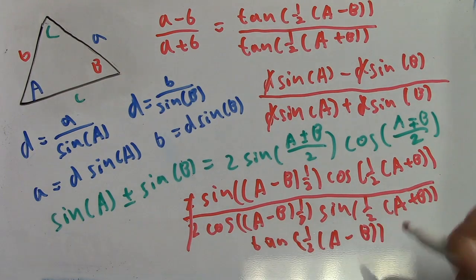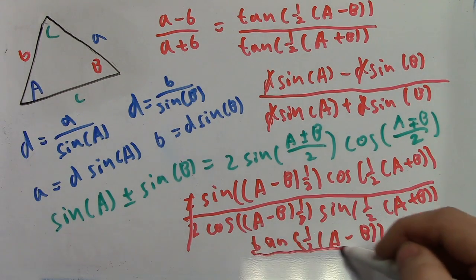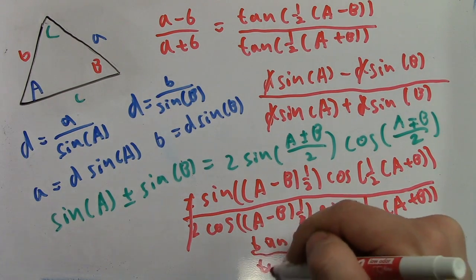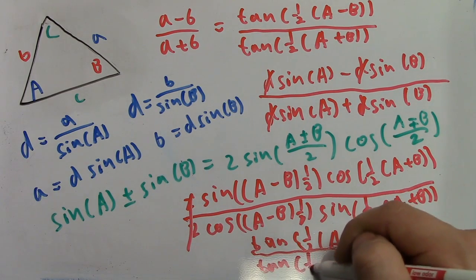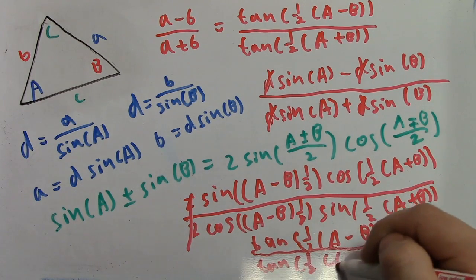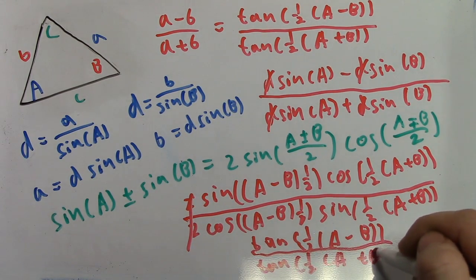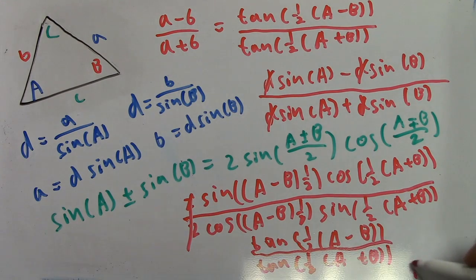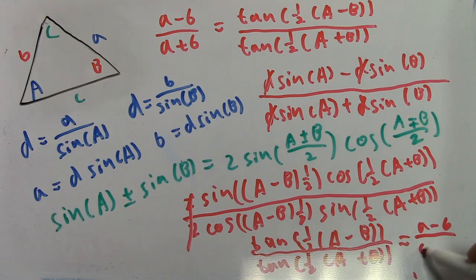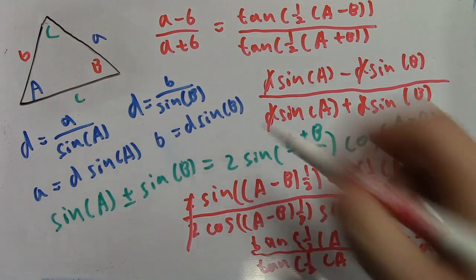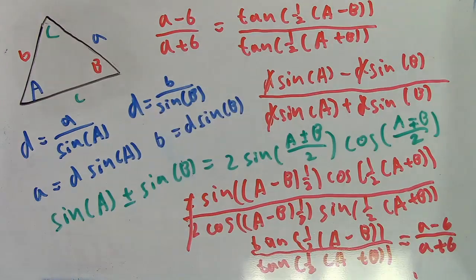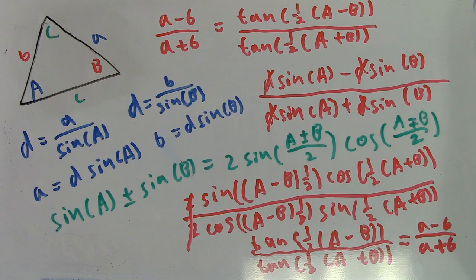Like I mentioned earlier with Law of Sines and Law of Cosines, the choice of angle-side pair was arbitrary, so Law of Tangents applies to all angle-side pairs in a triangle. Furthermore, while I used an acute angle for this example, Law of Tangents applies to any type of triangle with any angle distribution. And the same is true for Law of Sines and Law of Cosines.